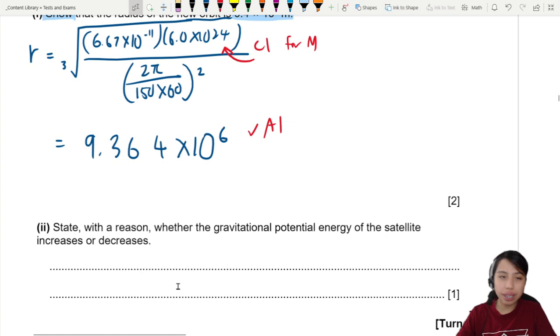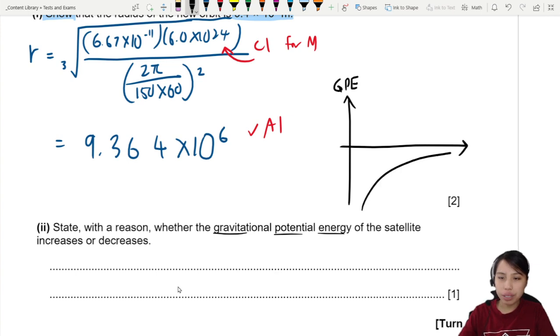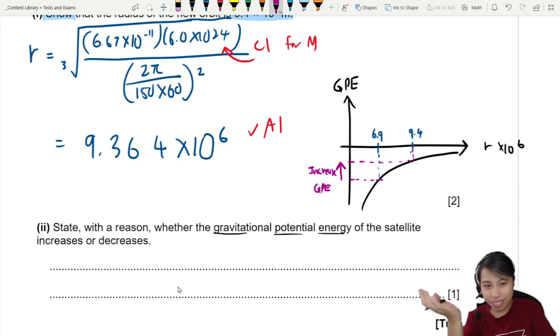Give me a moment to draw the graph. We're looking at gravitational potential energy. If I were to draw a graph of that, GPE looks something like this. We start off at 6.9, somewhere here. Then I go until 9.4, somewhere here. This diagram is not to scale. So I'm starting off at a quite negative GPE, then I go further to a higher GPE.